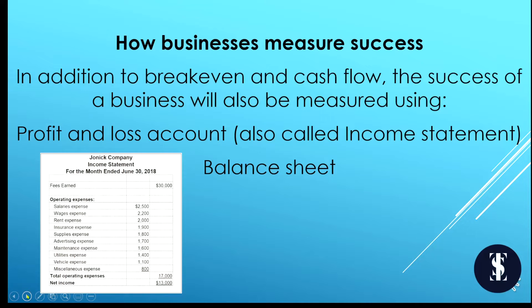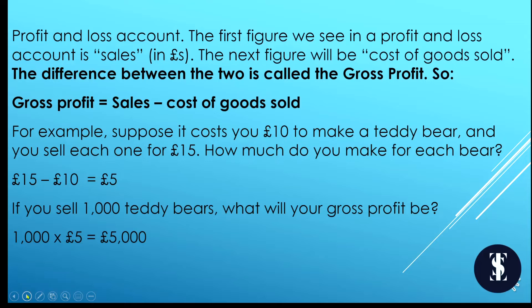On the profit and loss account, the first figure is sales, also called revenue or turnover. The next figure is cost of goods sold. The difference between the two is called gross profit: gross profit equals sales minus cost of goods sold. For example, if it costs £10 to make a teddy bear and you sell it for £15, you make £5 per bear. If you sell a thousand, you make a gross profit of £5,000.